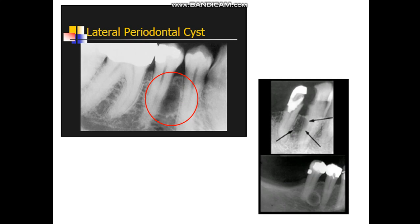The treatment of lateral periodontal cysts is different from that of periapical cysts. Lateral periodontal cysts can be treated by periodontal surgery, while periapical cysts can be treated by manipulation, marsupialization, or enucleation according to the size of the lesion.